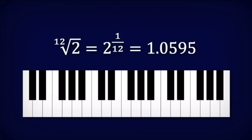The exact ratio between semitones is the twelfth root of two, approximately 1.05946.